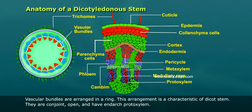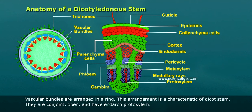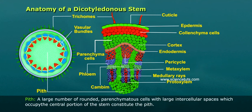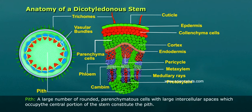Vascular bundles are arranged in a ring. This arrangement is a characteristic of dicot stem. They are conjoined, open, and have end-arch protozylum. A large number of rounded parenchymeter cells with large intercellular spaces, which occupy the central portion of the stem, constitute the pith.